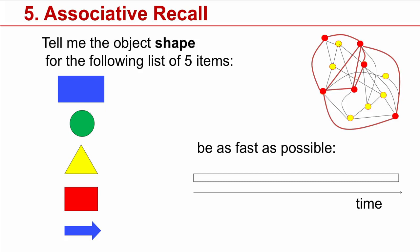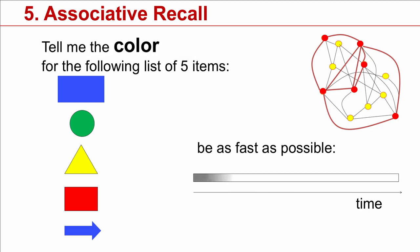Now, let's look at other forms of memory. Let's look at associative recall. I would like to first tell you the shape of these objects. It's a rectangle, it's a circle, it's a triangle, it's a rectangle again, and it's an arrow. Now, I would like you to tell, and you can just say it out loud or mumble it in front of you, just tell the color of these objects and try to be as fast as possible.